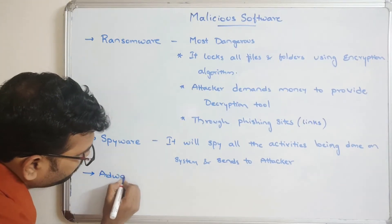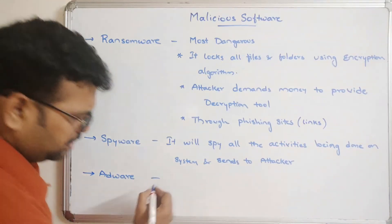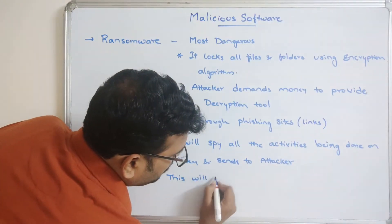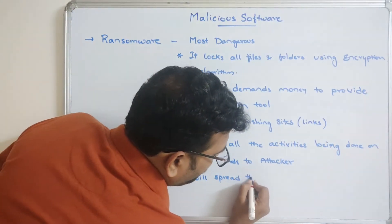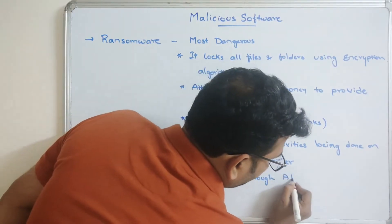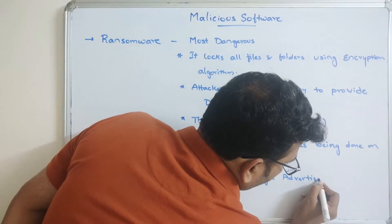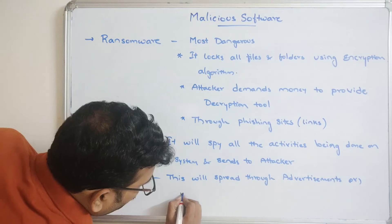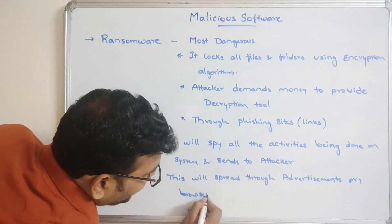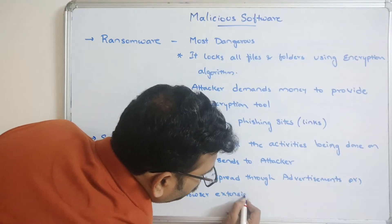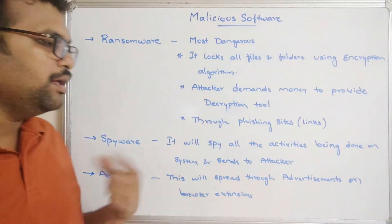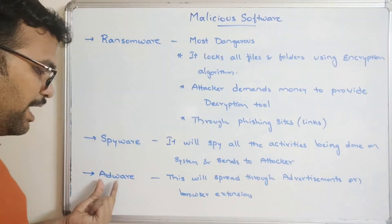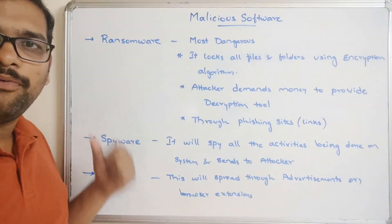The next type is adware. Adware spreads through advertisements or browser extensions. Through advertisements mainly, it will affect our system — that's why we call it adware. This is also one type of malicious software.